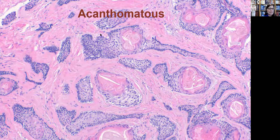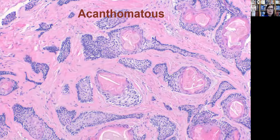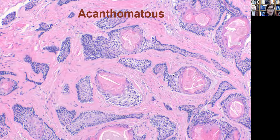Another variant is the acanthomatous variant. Here we see peripheral palisading at the edges of the island but also keratin pearls or squamoid change in the center of these islands. This represents about 12% of ameloblastomas. We also see a fibrocellular stroma in this variant.